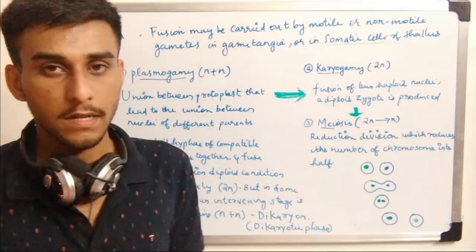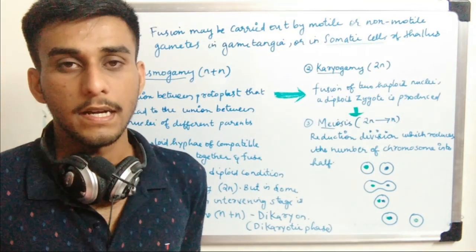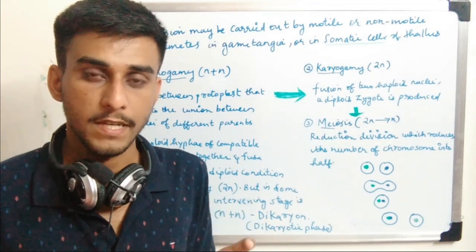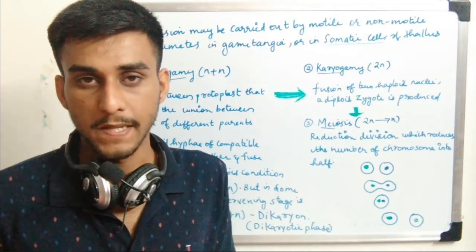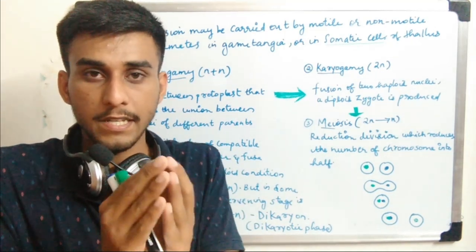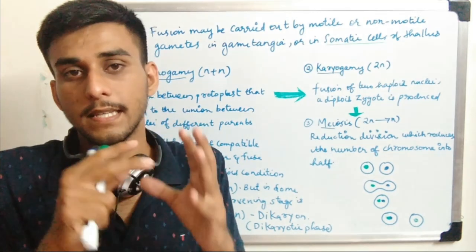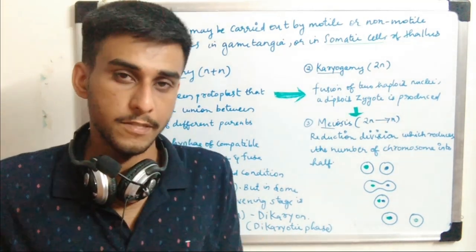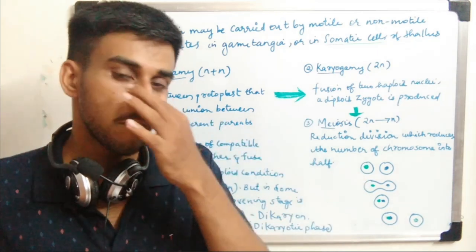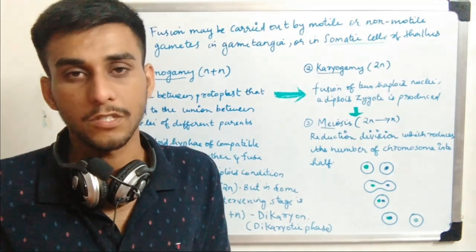There is another term known as dikaryon. After plasmogamy in some fungi, there occurs a dikaryotic phase — after fusion the two haploid nuclei come together but before complete fusion there is an intervening stage where a cell contains two nuclei. The cell containing two nuclei is known as the dikaryotic cell, and that phase is the dikaryotic phase.